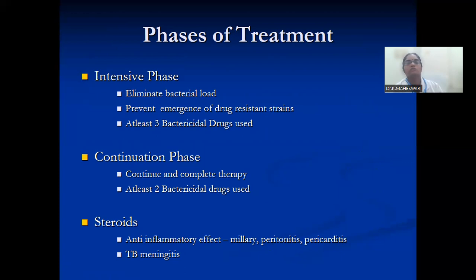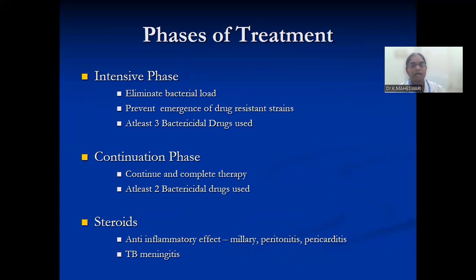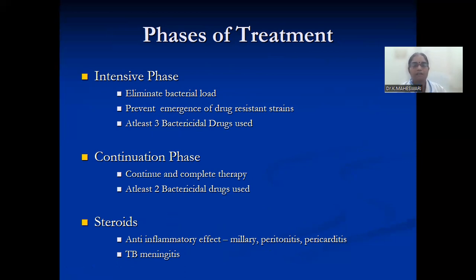Phases of treatment of tuberculosis: Intensive phase — to eliminate the bacterial load, prevent emergence of drug resistance; at least three bactericidal drugs are used. Continuation phase — complete the therapy using at least two bactericidal drugs. Steroids with anti-inflammatory effects are used in miliary TB, peritonitis, pericarditis, and TB meningitis.